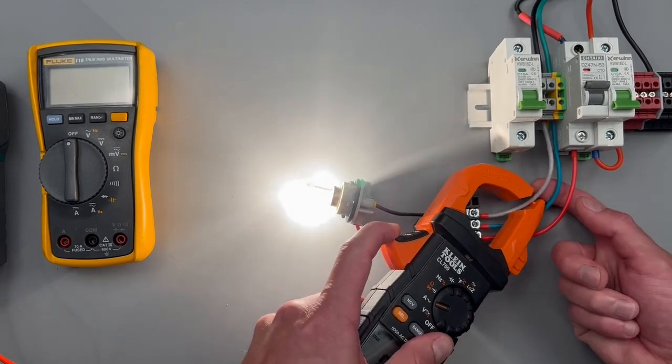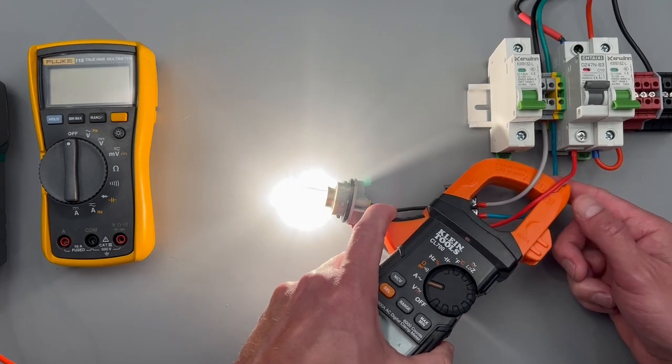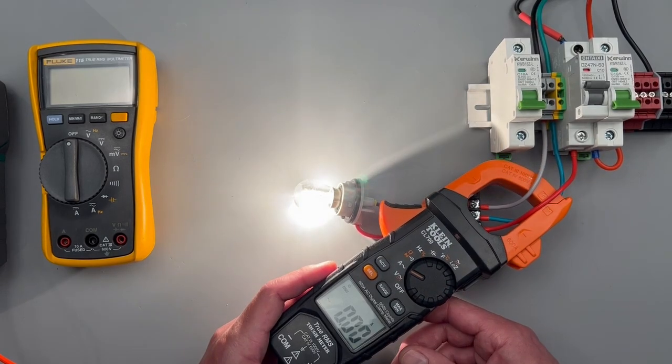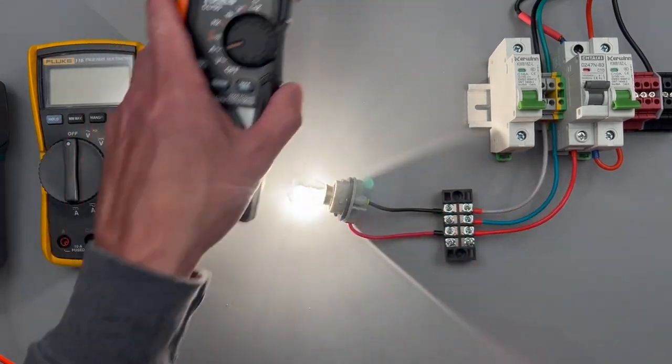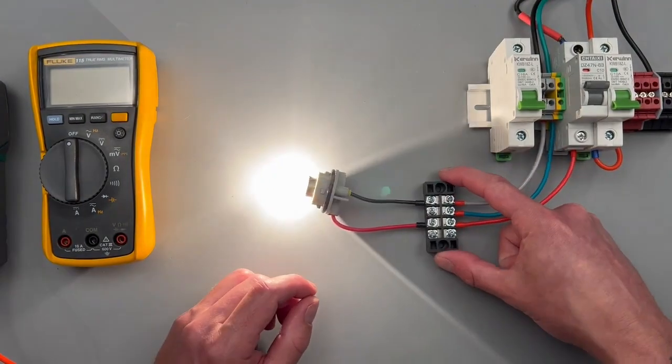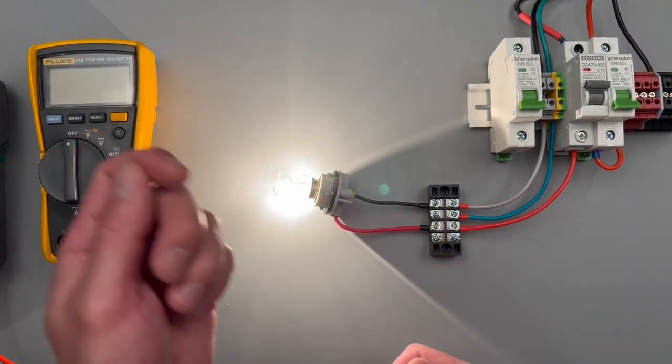Say I want to put it around an extension cord that doesn't have a separate neutral and hot—they're going to cancel each other out and it's going to come back at zero. If you're wanting to make a measurement with an amp clamp for something that's coming out of your wall, you'll want to look into something called a line splitter. That'll allow you to put the clamp around the neutral or the hot in a very safe manner.